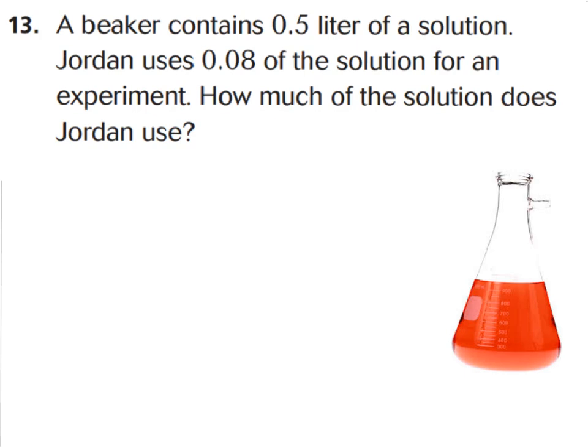For question number 13, it says a beaker contains 5 tenths liter of a solution. That means a half of a liter of a solution. Jordan uses 8 hundredths of the solution for an experiment. How much of the solution does Jordan use? So our equation is that Jordan uses, of 5 tenths, Jordan uses 8 hundredths of it. So we want to know what is 8 hundredths of 5 tenths. Go ahead and multiply the number that you see and then remember how many decimal points it should be to the right of your decimal point. You should have said 8 times 5 is 40. But I need to have 3 places to the right of the decimal and there's only 2 there for right now. Let's add a 0. Now I have 3 places. So Jordan used 40 thousandths of a liter of the solution.